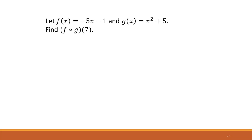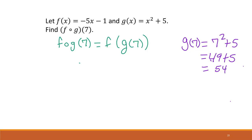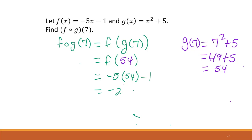Let's find f(g(7)). First we solve g(7): 7² + 5 = 49 + 5 = 54. Now we substitute that result into f, computing f(54). Using f(x) = −5x, we get −5 · 54 − 1 = −270 − 1 = negative 271. That is our final answer.